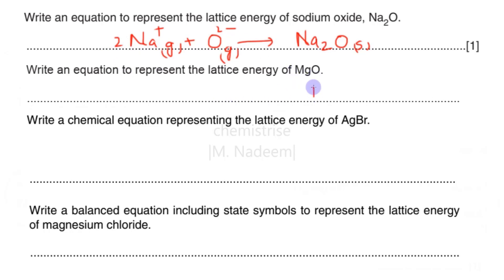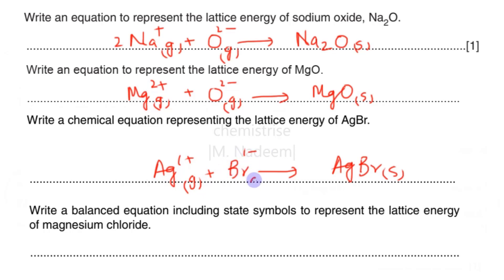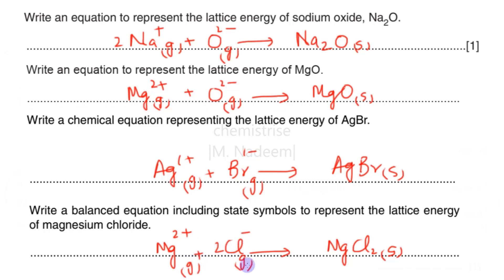For MgO, the same applies: Mg²⁺(g) + O²⁻(g) → MgO(s). For silver bromide: Ag⁺(g) + Br⁻(g) → AgBr(s). For magnesium chloride: Mg²⁺(g) + 2Cl⁻(g) → MgCl₂(s). This is how we construct equations for lattice energies.